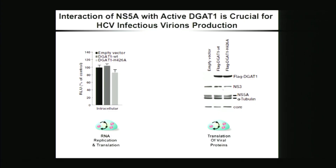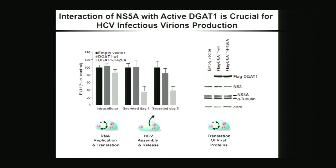To do that, we co-transfected cells with a luciferase reporter HCV virus and with wild-type DGAT1 or the mutant DGAT1. We first measured luciferase in the transfected cells, which reports on viral RNA replication and translation. We find that those steps are not affected by expression of the mutant DGAT1, confirmed by western blot showing HCV protein expression is unaffected. However, a few days after transfection, we took viral particles released in the supernatant and measured infectivity by infecting naive cells. We find that expression of the mutant DGAT1 induced a significant decrease in the amount of infectious viral particles released. So NS5A translocation to lipid droplets via DGAT1 activity is required for HCV assembly and release.